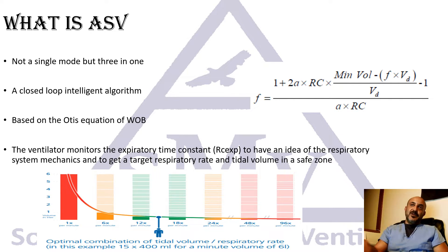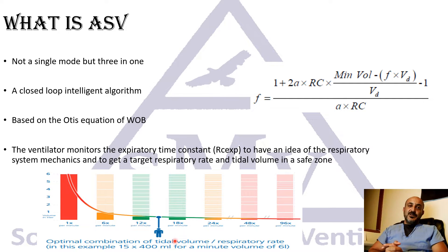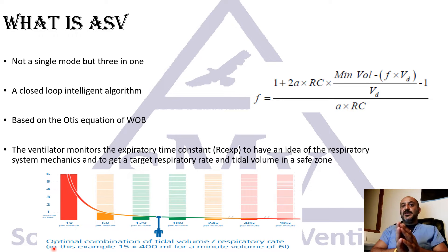The mode is based on the famous Dr. Otis equation of work of breathing from the 1950s — a complex mathematical equation that essentially asks: how do we achieve the least work of breathing? We either go with a high tidal volume and low respiratory rate, or a low tidal volume with a higher respiratory rate. The ventilator continuously monitors the expiratory time constant, which reflects resistance and compliance, giving a snapshot of respiratory mechanics. Based on this, the ventilator targets a safe tidal volume and respiratory rate to minimize work of breathing.